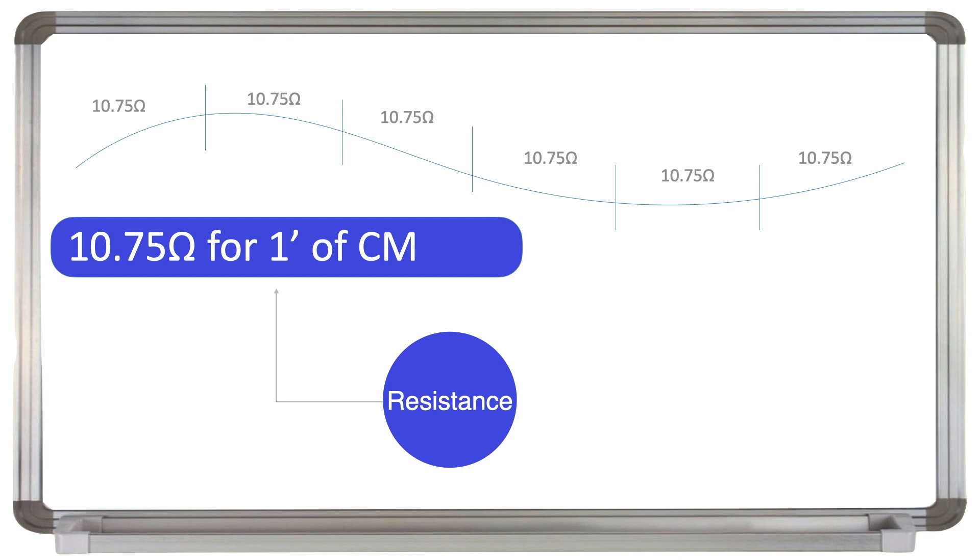However, if we make the cable thicker, the resistance goes down, so thicker cables have less voltage drop simply because they have less resistance.